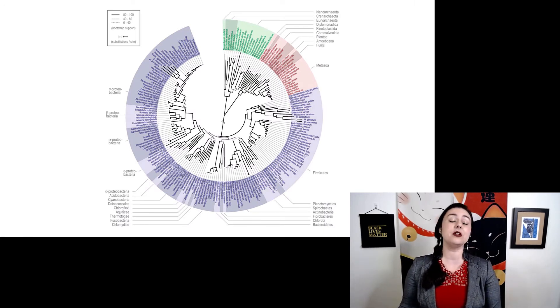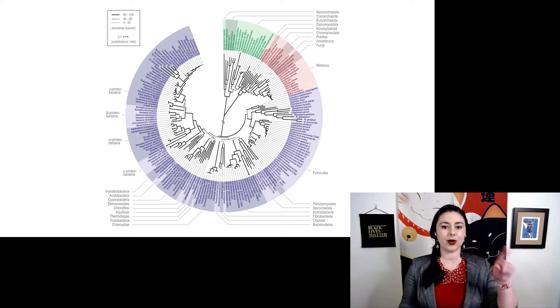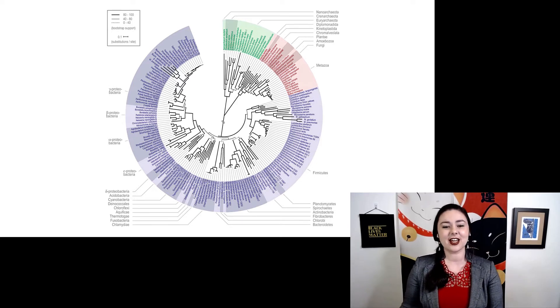Of course, if we have even more species on our tree, we might have to do something like this, and we might have a circular tree because we just need that much space to put it all on the same page. And here again, they've colored it in to show groups that are closely related to each other, which always helps here.